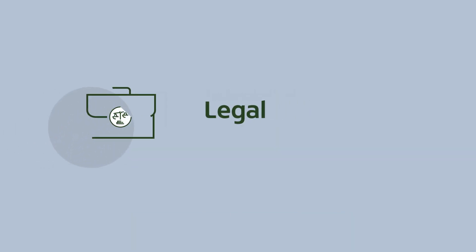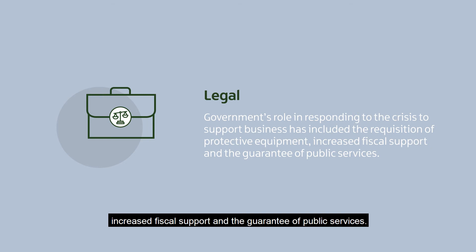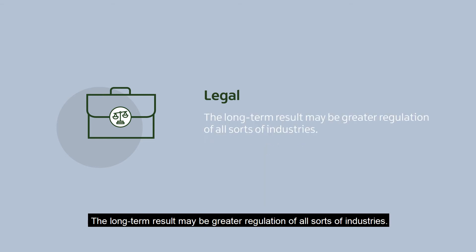Legal. The government's role in responding to the crisis to support business has included the requisition of protective equipment, increased fiscal support and guarantee of public services. The long-term result may be greater regulation of all sorts of industries.